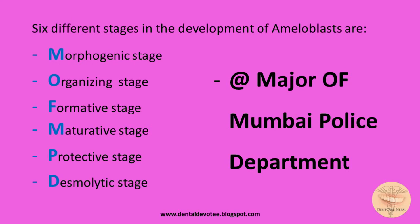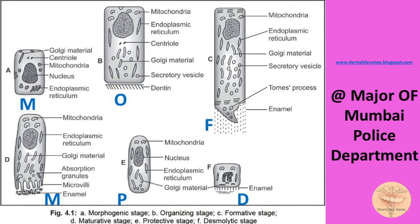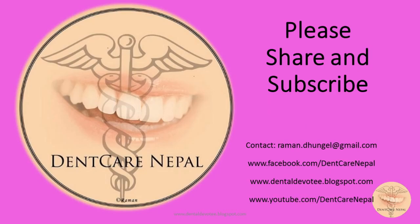The initials of each word give the clue to the respective stages: M for morphogenic, O for organizing stage, F for formative stage, M for maturative stage, P for protective stage, and D for desmolytic stage.